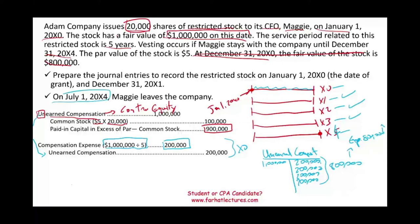But here's what happened. July 1st, 20X4 — six months right before Maggie is ready to get those shares — she left the company. If Maggie leaves, the deal is that's it. Forget about her restricted stocks.